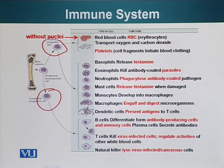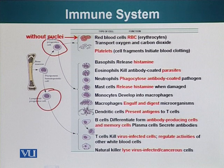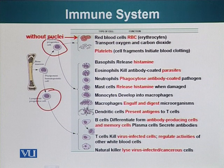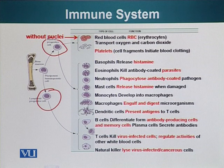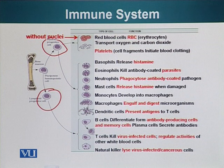The lymphoid progenitor cells give rise to lymphocytes. There are three different types of lymphocytes: B cells, which make antibodies; T cells, which kill virus-infected cells and regulate the activities of other immune cells; and the third category, natural killer cells, which lyse virus-infected cells or cancer cells.